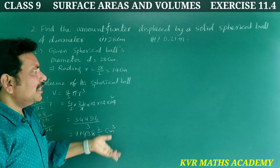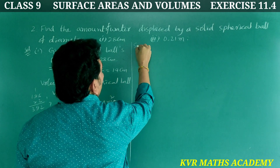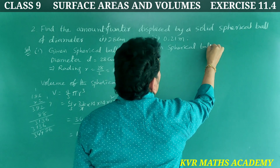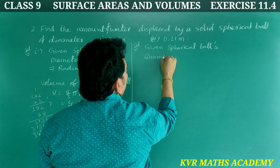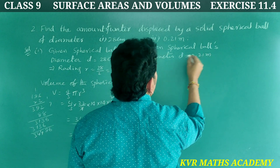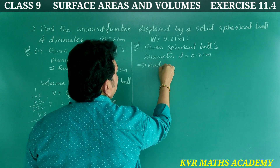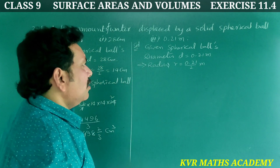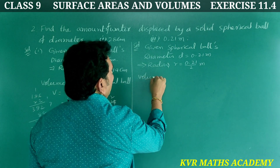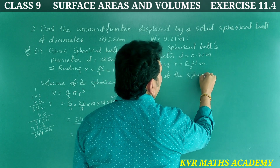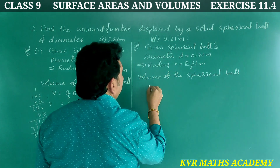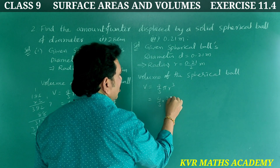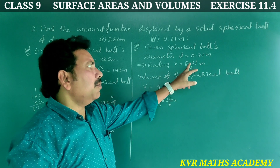Volume of the spherical ball with diameter 28 cm is 11498⅔ cm³. Now for the second part: given diameter d = 0.21 meters, so radius r = 0.21/2 meters. Volume V = 4/3 × (22/7) × (0.21/2)³.